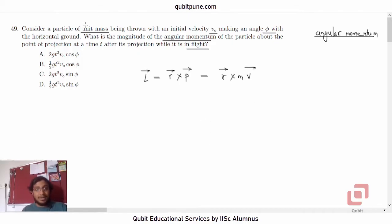Because the particle has a unit mass, unit mass means m is equal to 1. Therefore, it is R bar cross v bar.